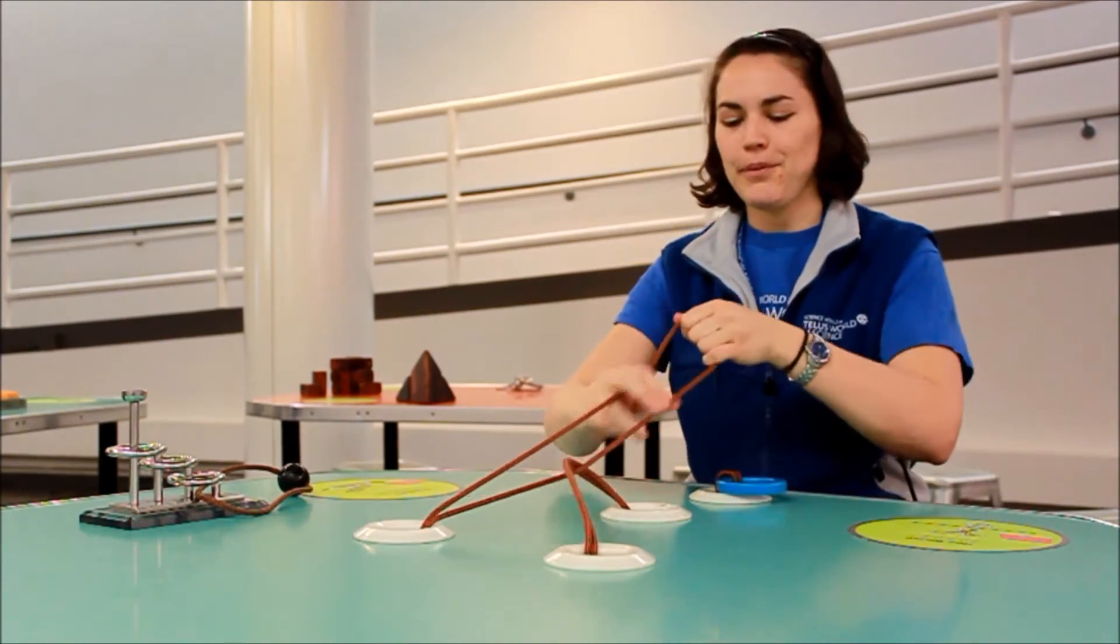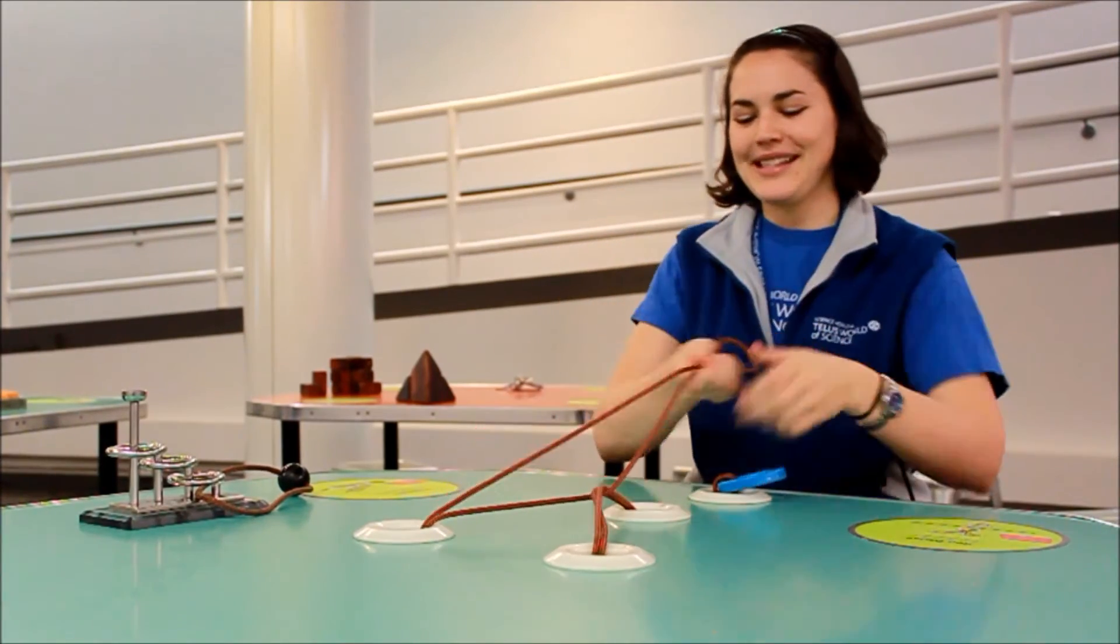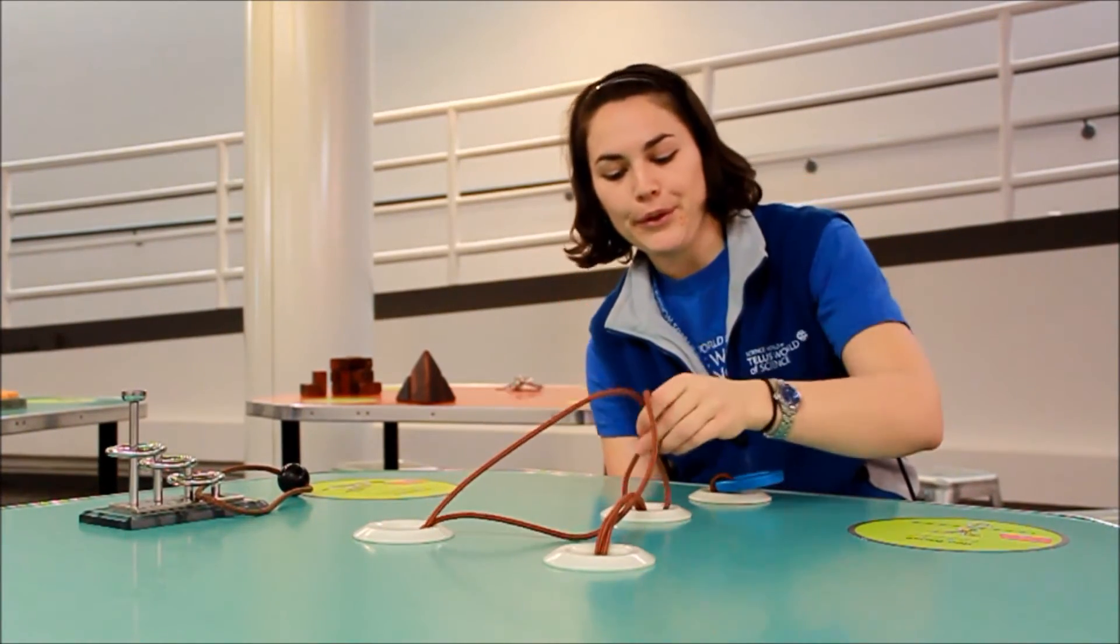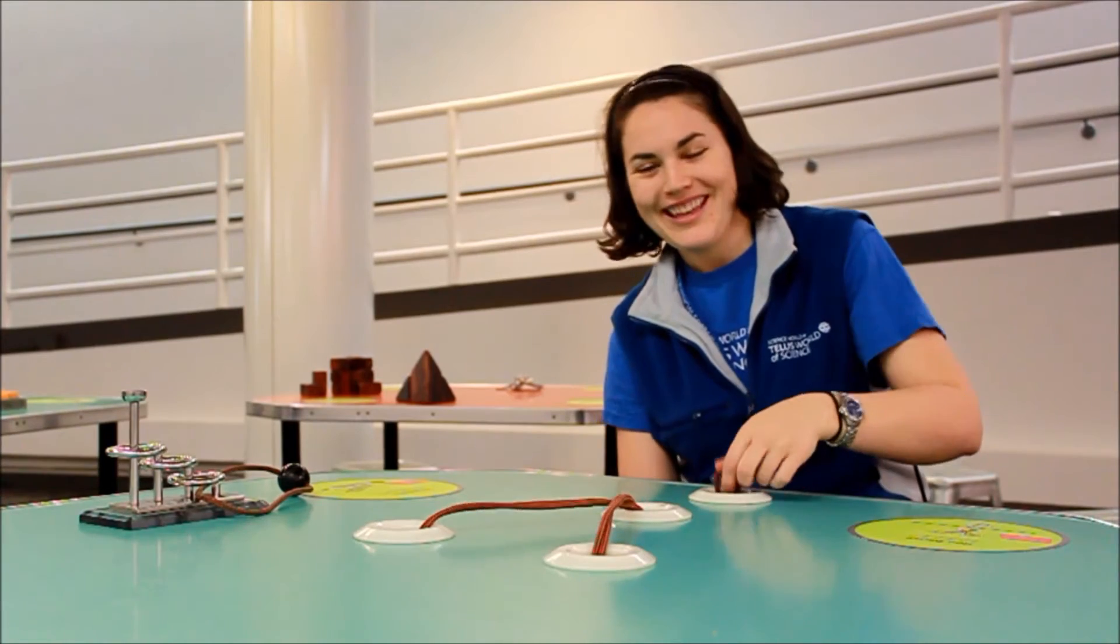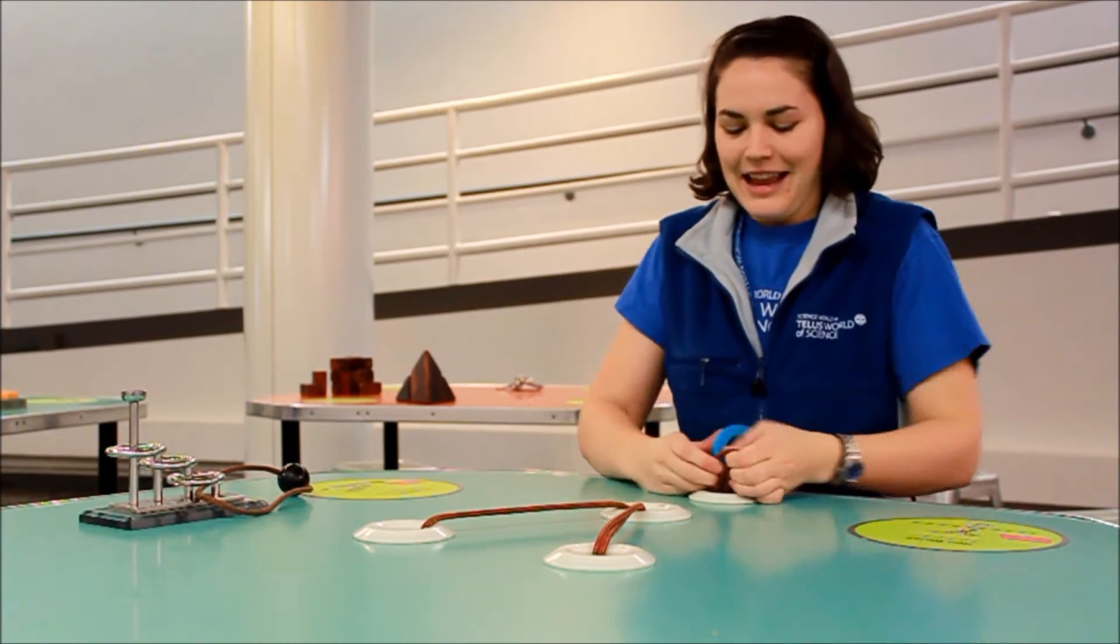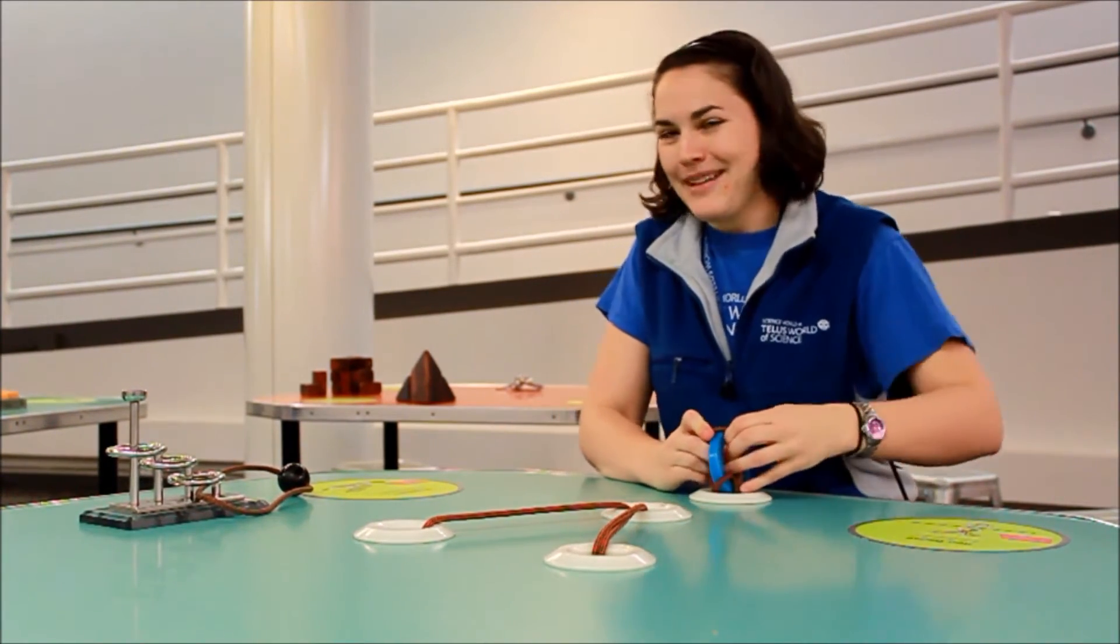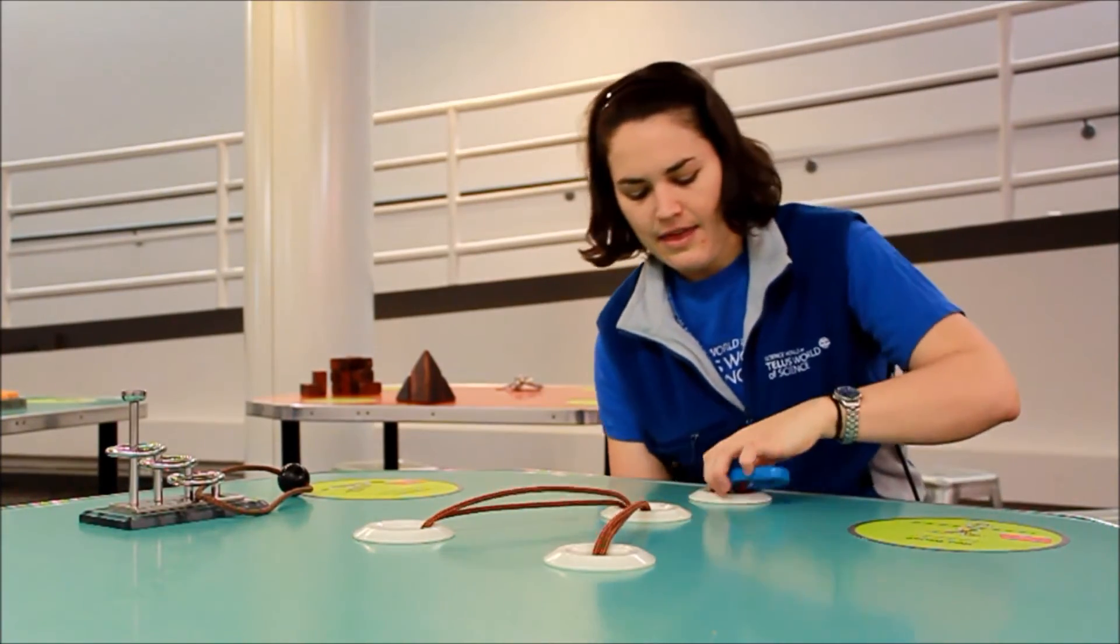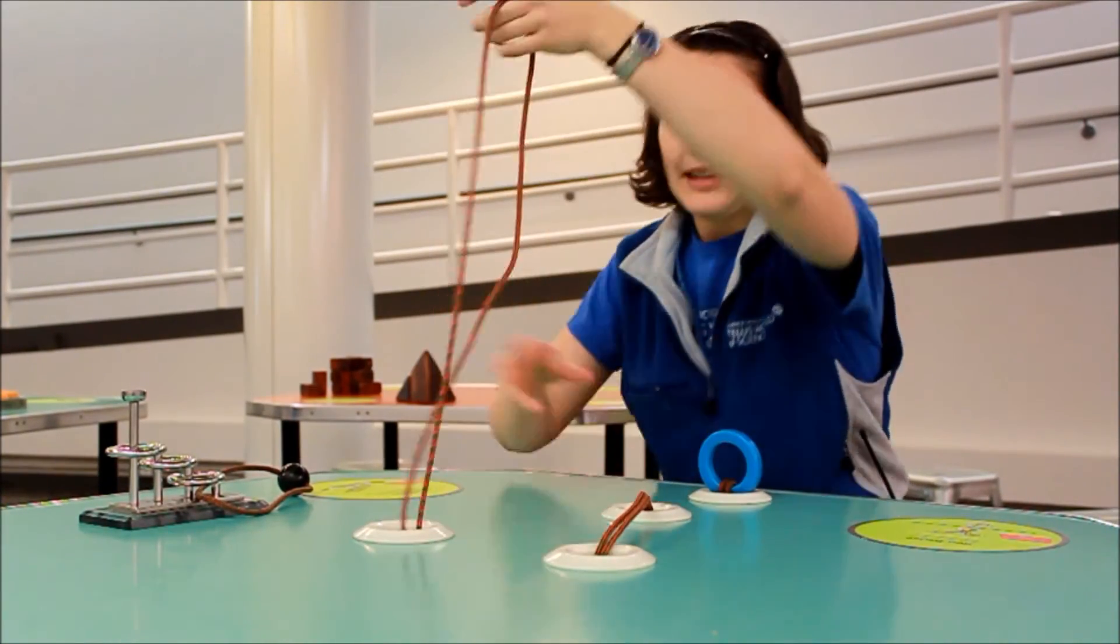So, you take the loop, get it nice and loose, and you feed it through the middle hole, and then back up to where the ring is, and around the ring. It might be a bit snug, and then you can pull it loose.